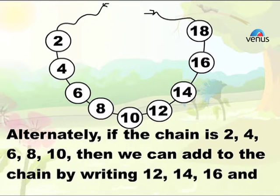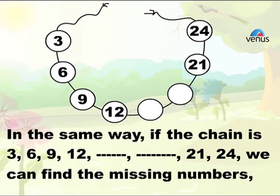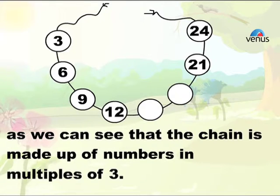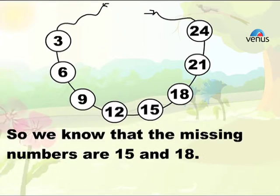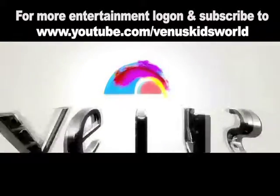In the same way, if the chain is 3, 6, 9, 12, 21, 24, we can find the missing numbers. As we can see that the chain is made up of numbers in multiples of three, so we know that the missing numbers are 15 and 18.